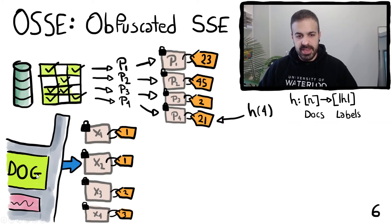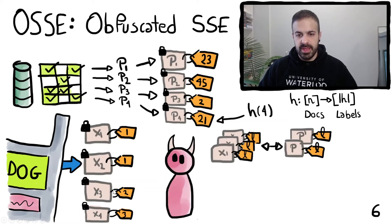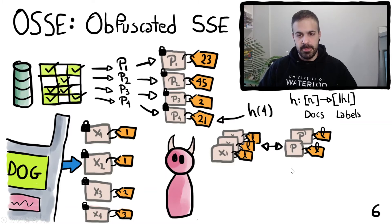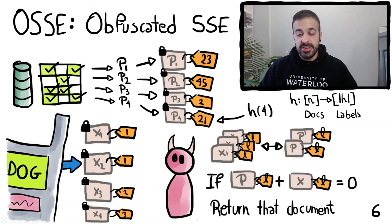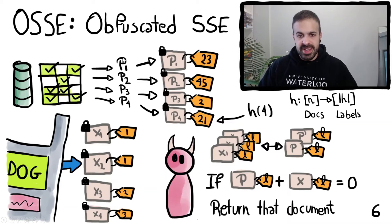When we query for a keyword we generate multiple query tokens and attach a label to them. Then the adversary evaluates all of the tokens with a certain label in all of the polynomials with the same label. The adversary returns the documents for which at least one query token evaluated in the corresponding polynomial was zero. We're going to see how we generate these polynomials, the roots of these polynomials, and then the query tokens.